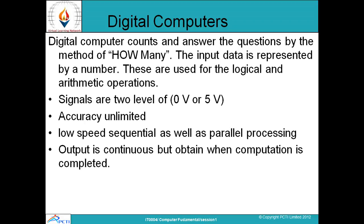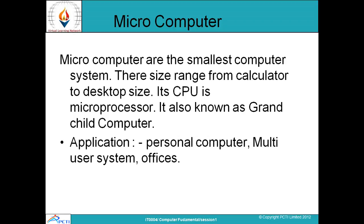The other type is the digital computer. While analog computers use the 'how much' concept, digital computers use the 'how many' concept. They also have signals but of two levels — unlike the continuous signals of analog computers. Their accuracy is unlimited. Digital computers support both sequential and parallel processing, and output is obtained when computation is completed.